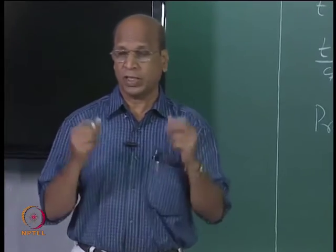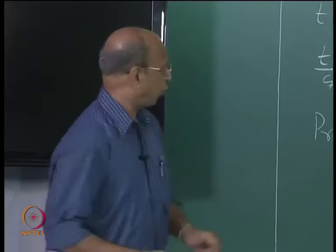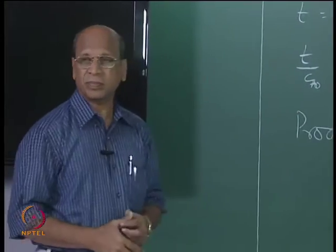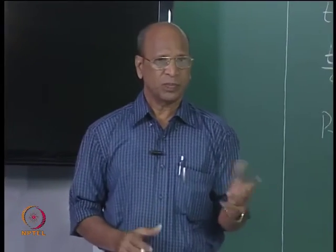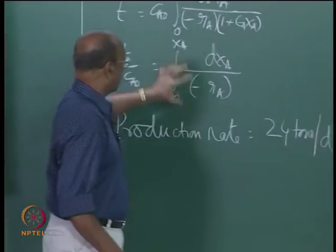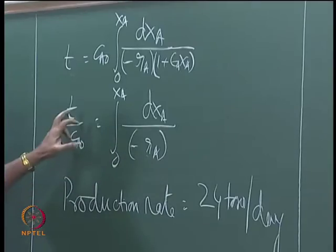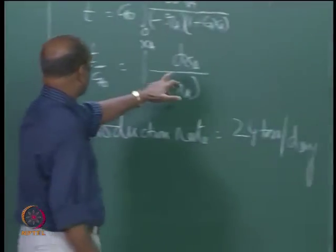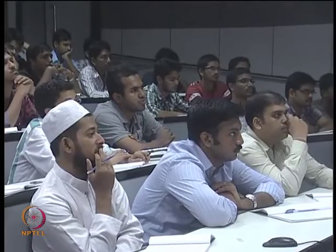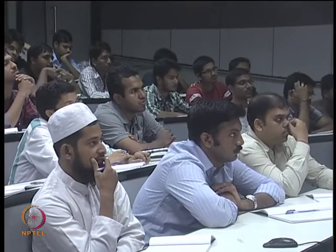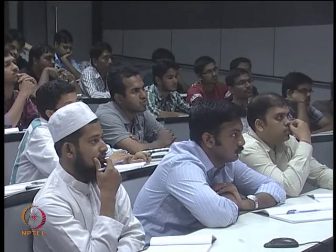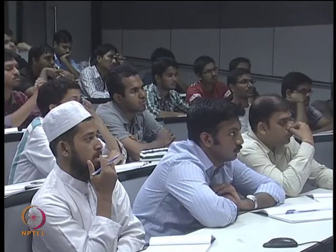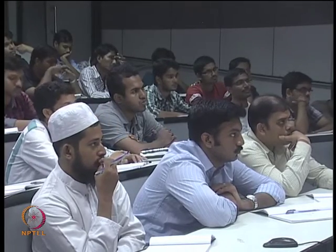But my this design expression will not tell me what is the volume required to produce 24 tons per day. How do I calculate what is the volume of the reactor from this information 24 tons per day and time. That area under the curve I will, this area under the curve I will evaluate and then find what is T. That is what I did, amount of from conversion, let us say for 90 percent conversion if I take or 99 percent conversion, this equation gives me only time.